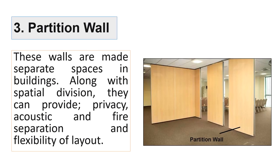The third type is partition walls. Partition walls are a type of non-load bearing walls and are mainly used to separate part of a space. Their other functions include privacy, acoustic separation, fire separation, and so on. For example, if there is a big hall and you want to make different sections for different purposes, you would use partition walls. These are made of light materials such as timber, plywood, and wood. As shown in the image, this is an office area where these are the partition walls.